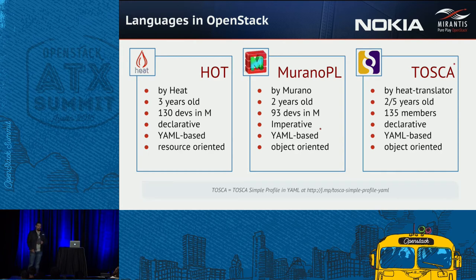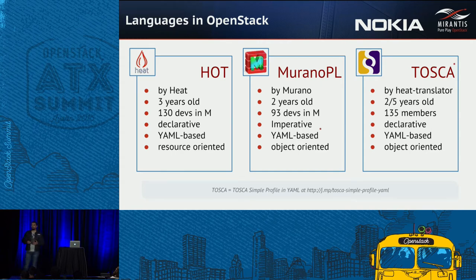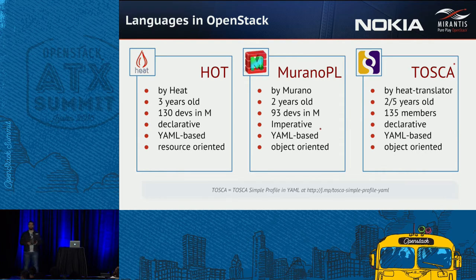Each of the three languages can be described as either resource-oriented or object-oriented. For Heat, resource-oriented means that most constructs in the language are a resource — specifically your cloud resource: your VM, your network, your port, which you attach the VM to the network, or any other cloud resource.